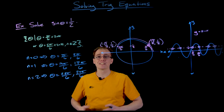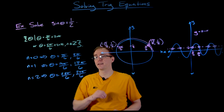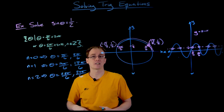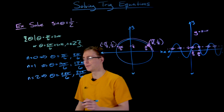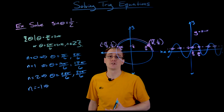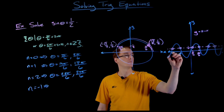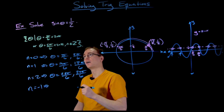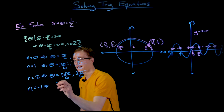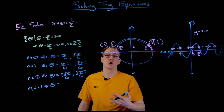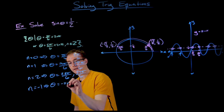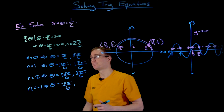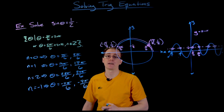Listing solutions out is useful when searching for specific values, like all solutions to sine of theta in an interval from 0 to 2π or from 2π to 4π. We just plug in n values until we find the ones we're looking for. Also, n can be any integer including negative ones — that's how we get solutions to the left of the initial solutions. Plugging in n = −1 is the same as subtracting 2π: π/6 − 2π gives us −11π/6, and 5π/6 − 2π gives us −7π/6.